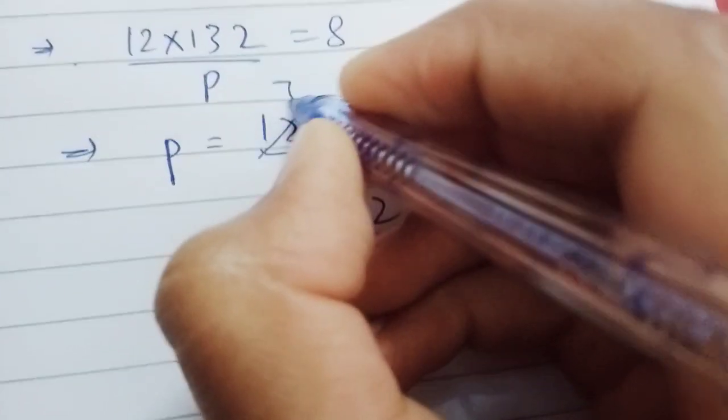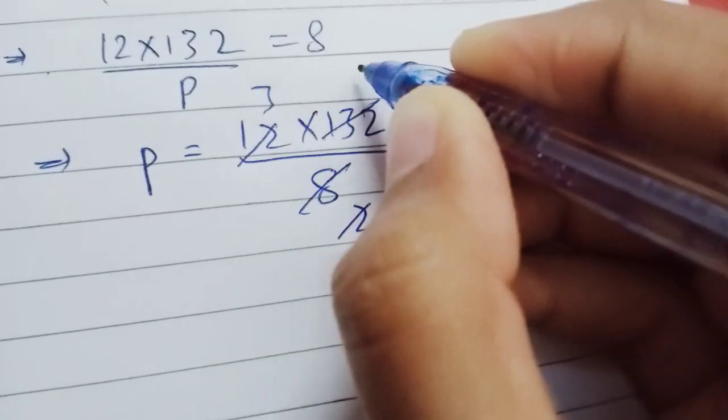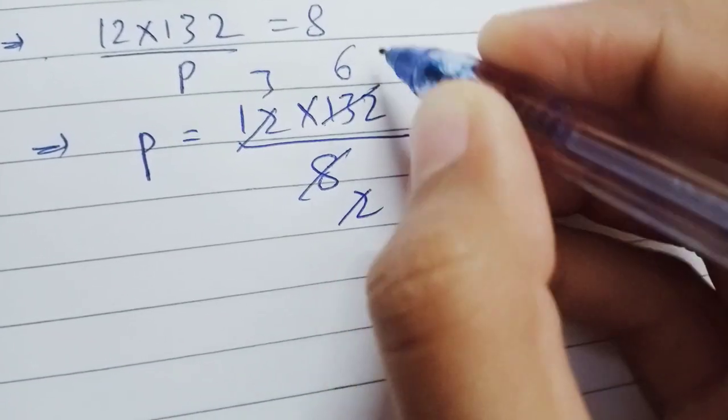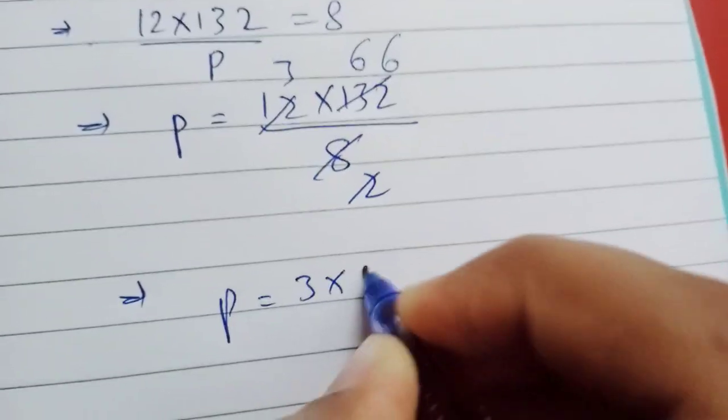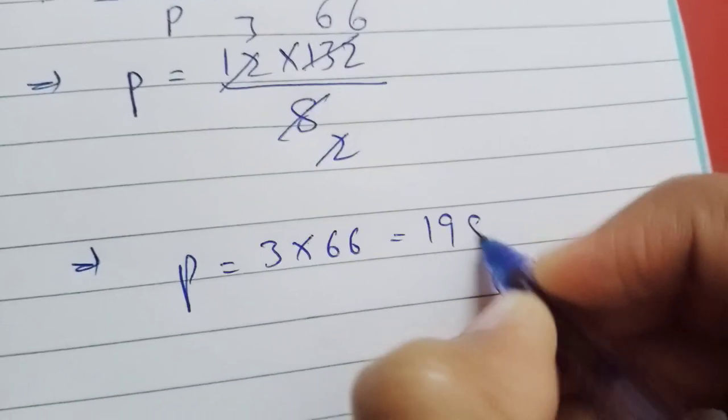Simplifying, this gives p = 3 times 66, which equals 198. So p = 198.